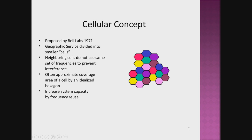The geographic area is divided into smaller cells as shown in the figure. The neighboring cells do not use the same set of frequencies. Each frequency is shown by a different color and no same colors are neighboring each other, which depicts that neighboring cells do not use the same set of frequencies. The size of the cell was idealized as a hexagon, and this increased the system capacity by frequency reuse.